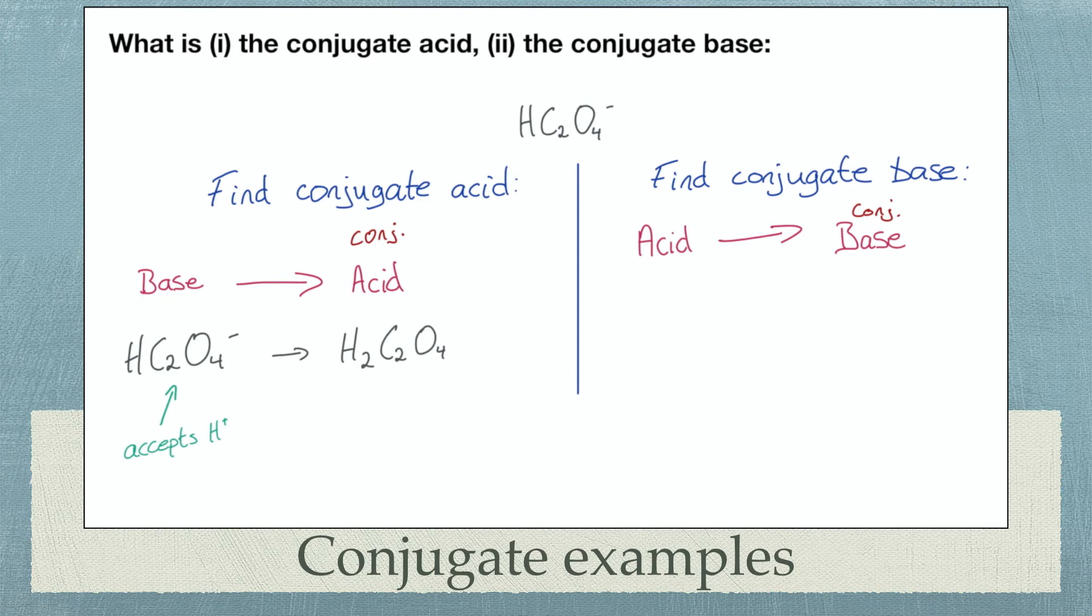We can apply the same logic to find the conjugate base. Step 1. We are looking for the conjugate base. So therefore HC2O4 minus is the acid. I write down the ion with the acid above it.